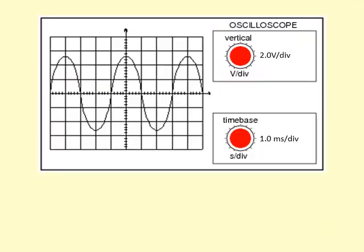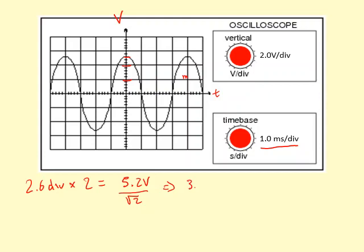Here we've connected the alternating power supply to an oscilloscope, which measures the voltage on the y-axis and time on the x-axis. The two important variables are the volts per division and the time base, which is the time per division. On the y-axis, we've got 1, 2, 0.6 — so 2.6 divisions. If we multiply that by the volts per division, we get 5.2 volts. That's the peak voltage. If I divide that by root 2, I can get the RMS, which is 3.68 volts.